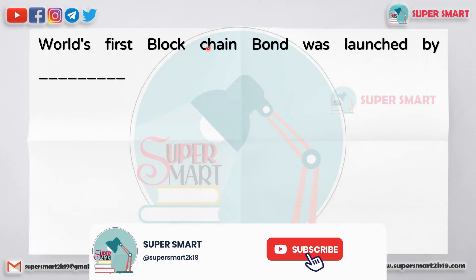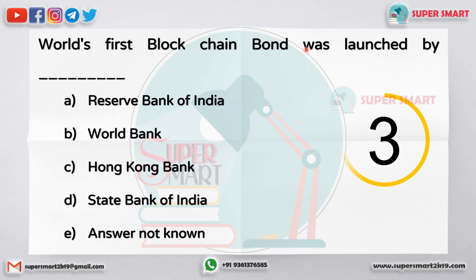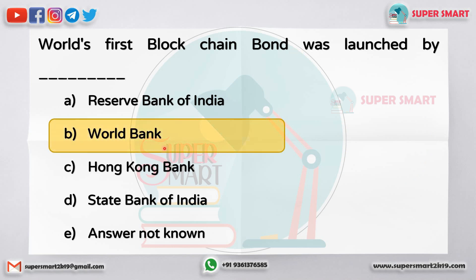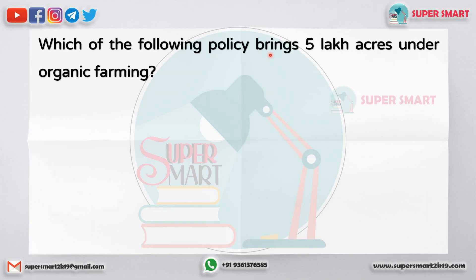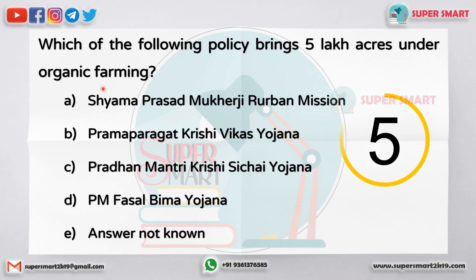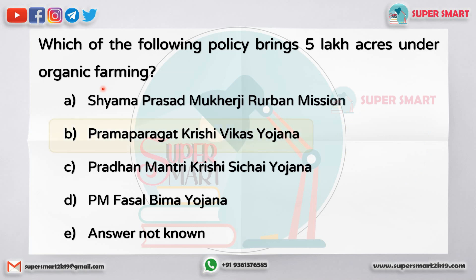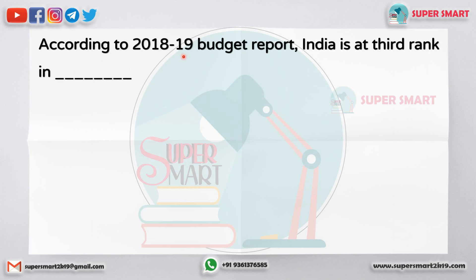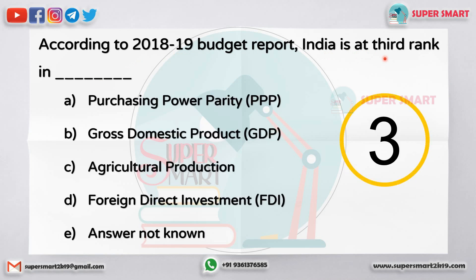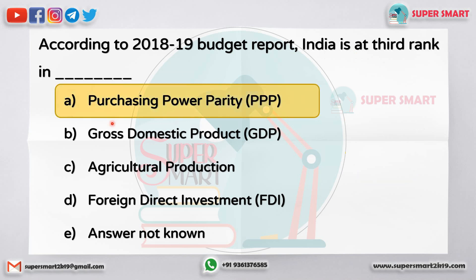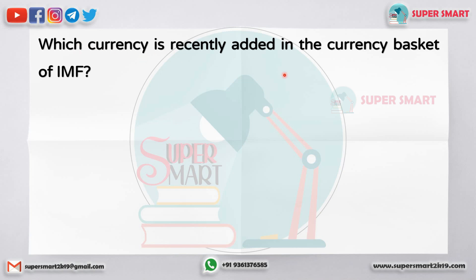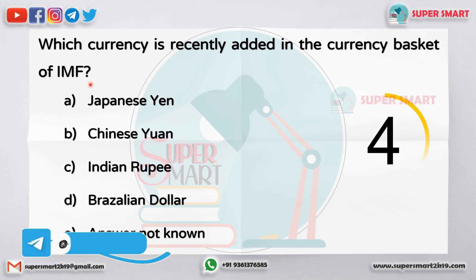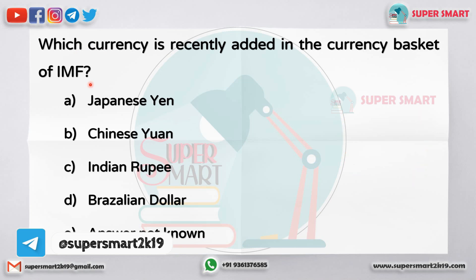Which was the first blockchain bond launched? The answer is the World Bank. Which of the following policies brings 5 lakh acres under organic farming? Which currency was recently added to the currency basket of IMF? The answer is the Chinese Yuan (Renminbi).